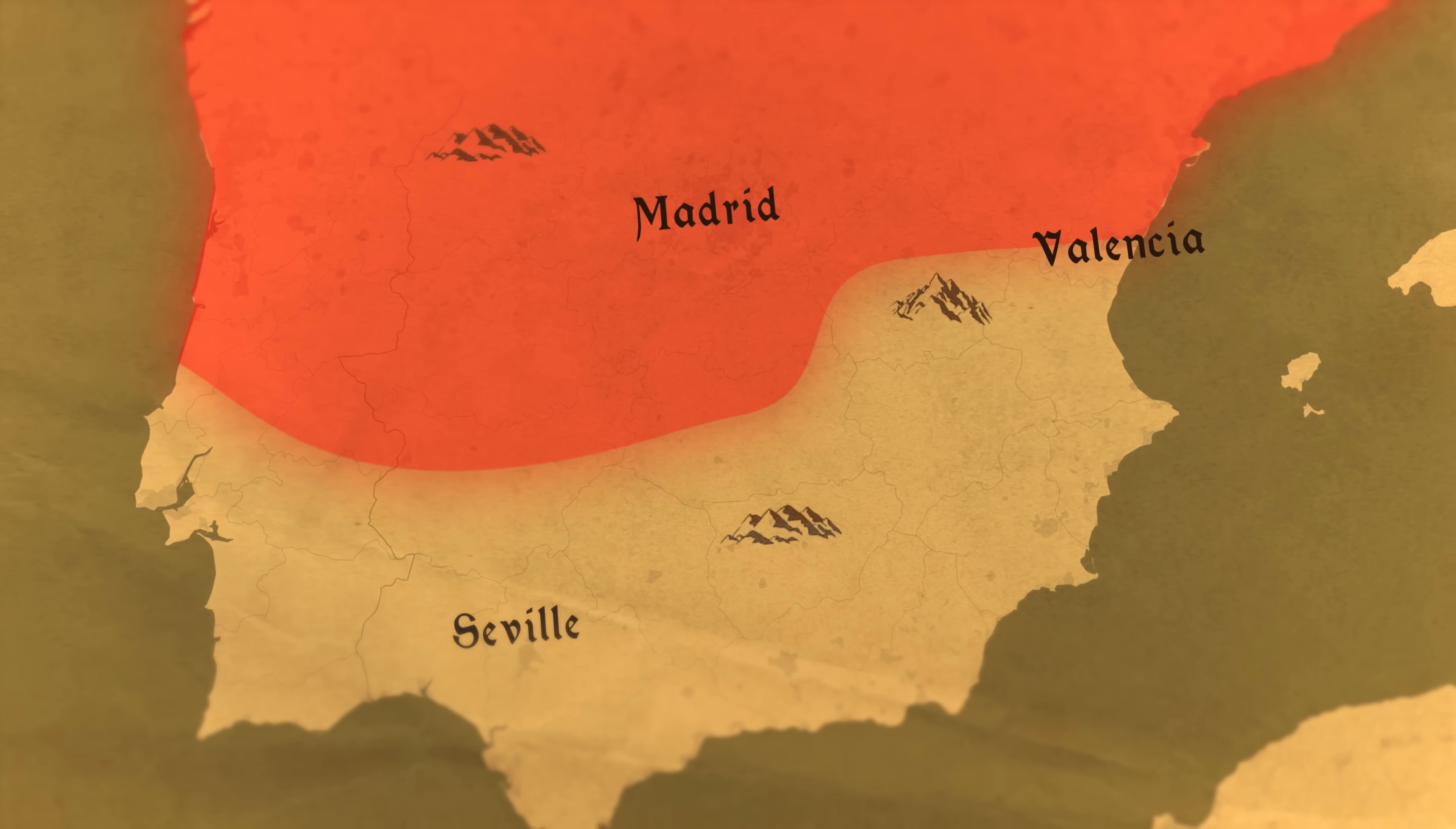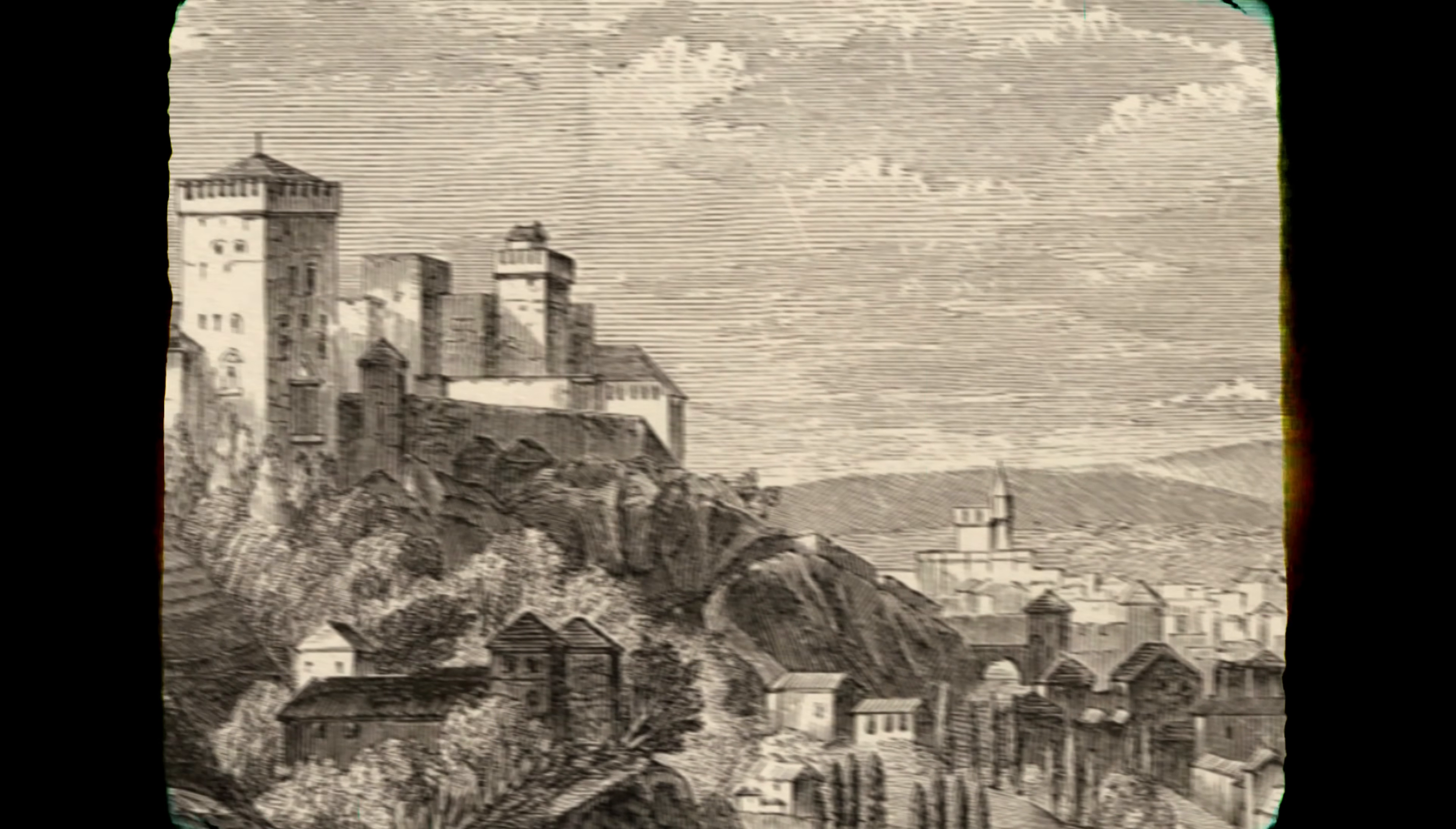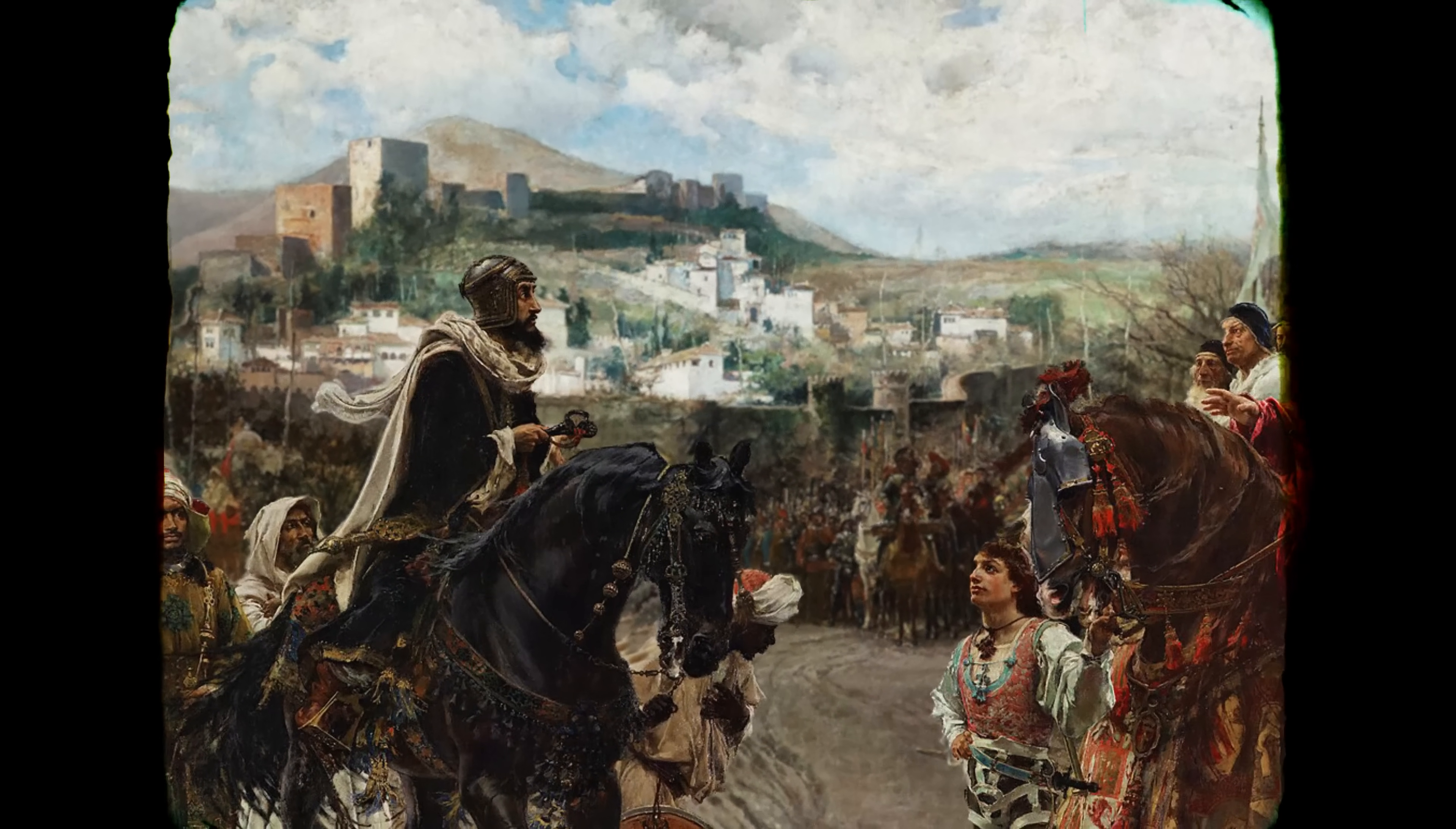All over the land, Muslim cities were being conquered and taken over by the Christians. But amidst all of this, one city remained unconquered, Granada. Thanks to its strategic position and the enormous Alhambra Palace, the city was protected and it remained untouched for another 200 years.